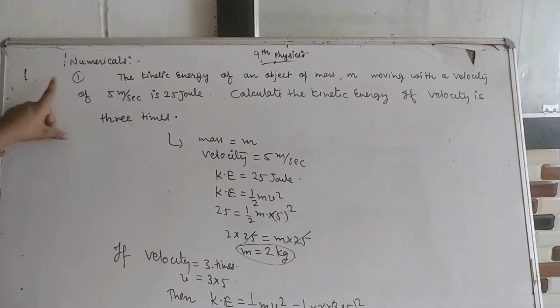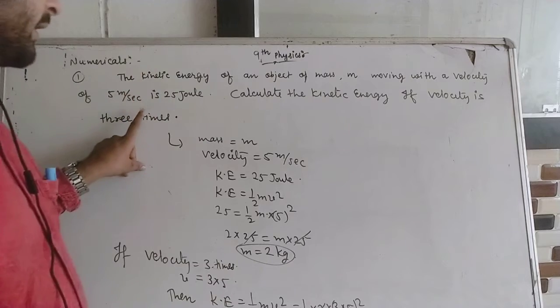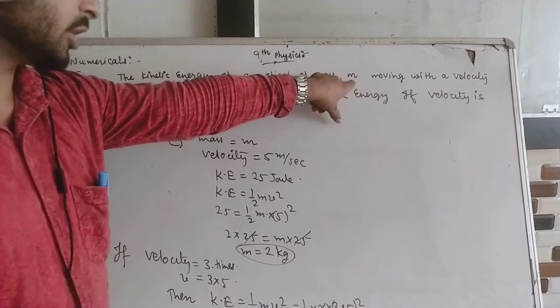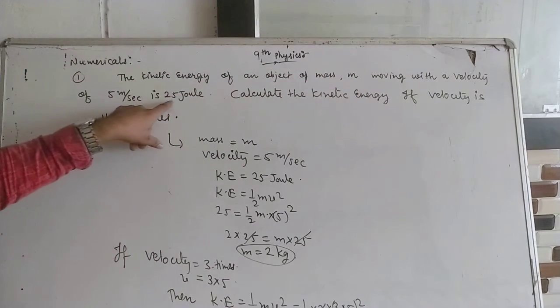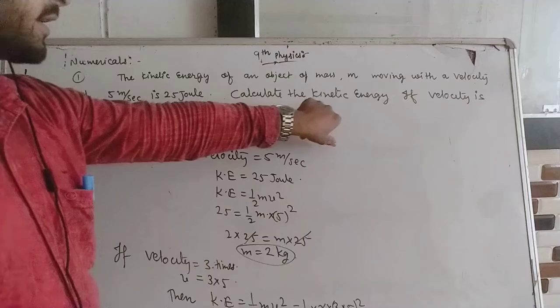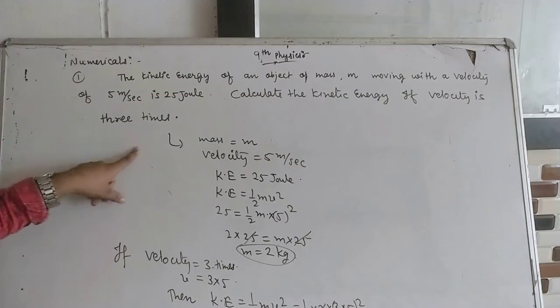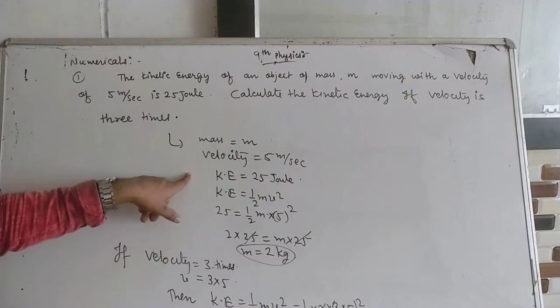Good morning class. Today's numerical is on kinetic energy. The kinetic energy of an object of mass m moving with a velocity of 5 meters per second is 25 joules. Calculate the kinetic energy if velocity is three times. Given: mass is m, velocity is 5 meters per second, kinetic energy is 25 joules.